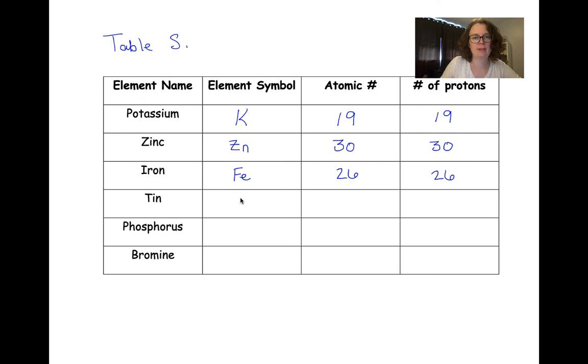Tin has an element symbol Sn. This is another one that's a little bit weird when we look at the element symbol versus the element name. But the atomic number is going to be 50, and our number of protons will be 50.